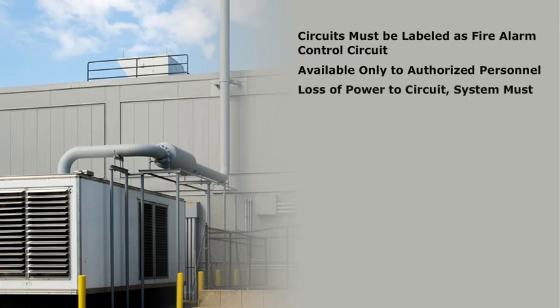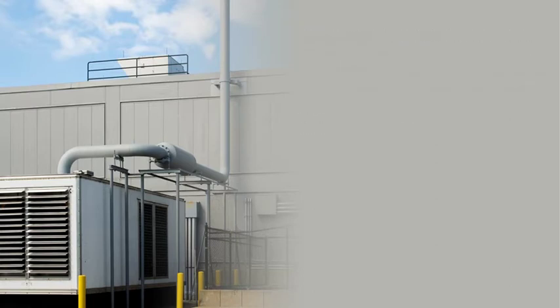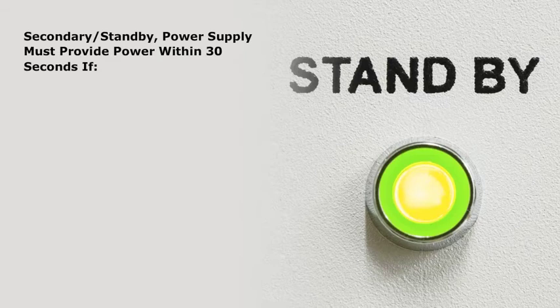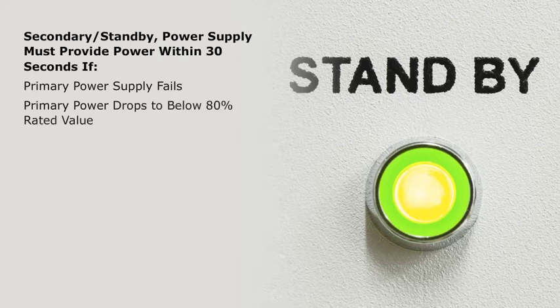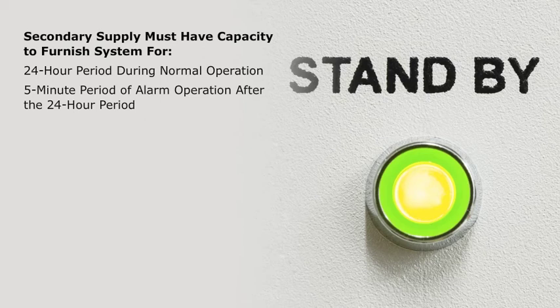In the event of loss of power to the fire alarm circuit, the system must be equipped to provide an alarm and provide notification that the power supply has been interrupted. The secondary or standby power supply must provide power to the entire electric fire alarm system within a 30-second period in the event that the primary power supply fails, or if the primary power drops to below 80% rated value. The secondary supply must have the capacity to furnish the electric fire alarm system for a 24-hour period during normal operation, and for a 5-minute period of alarm operation after the 24-hour period.